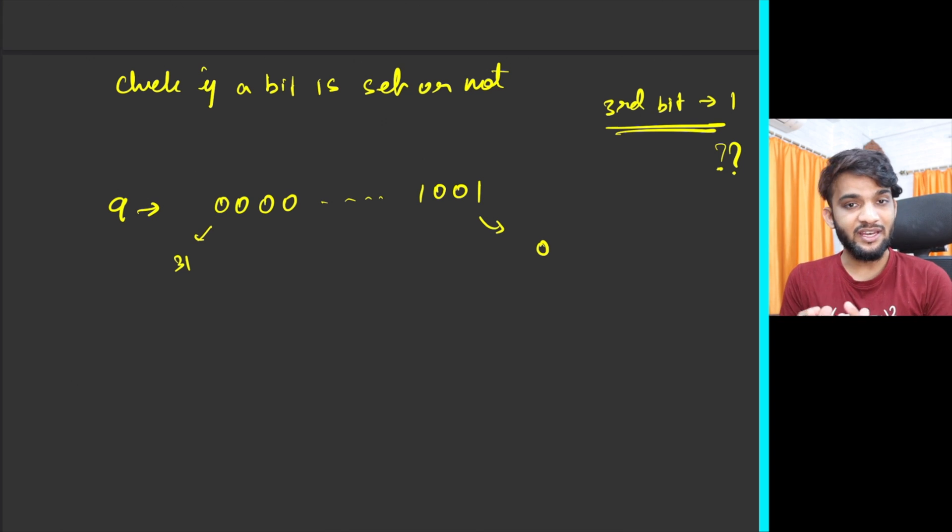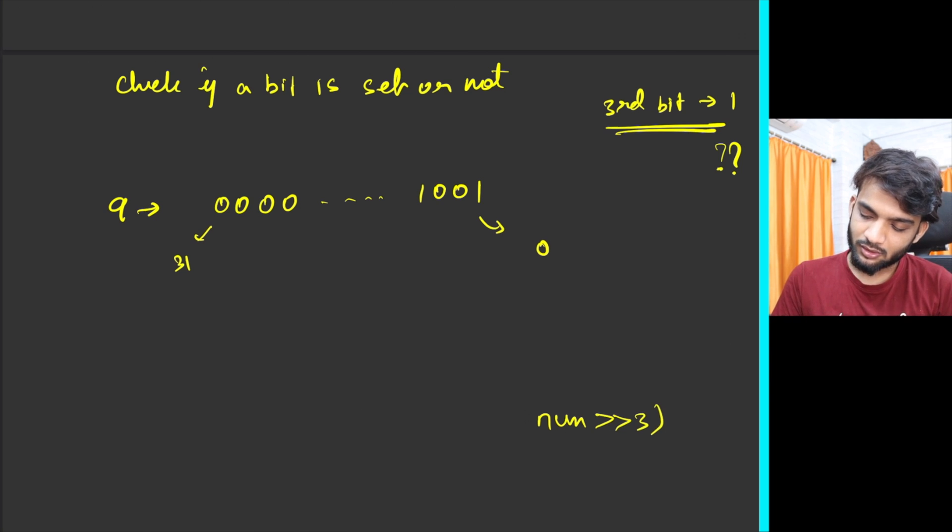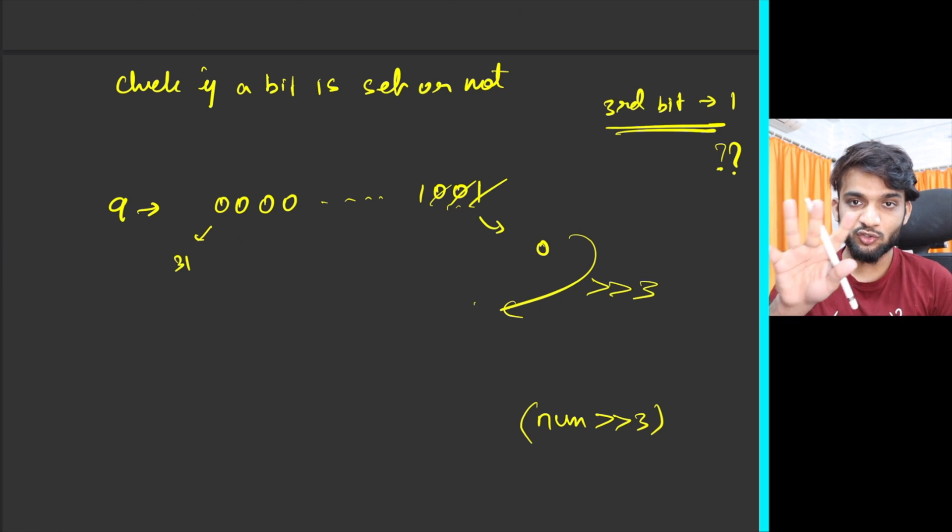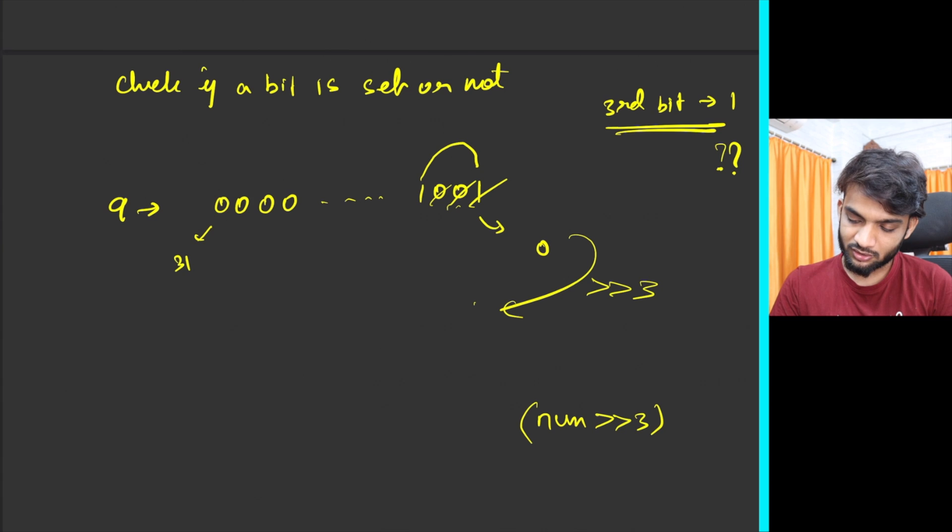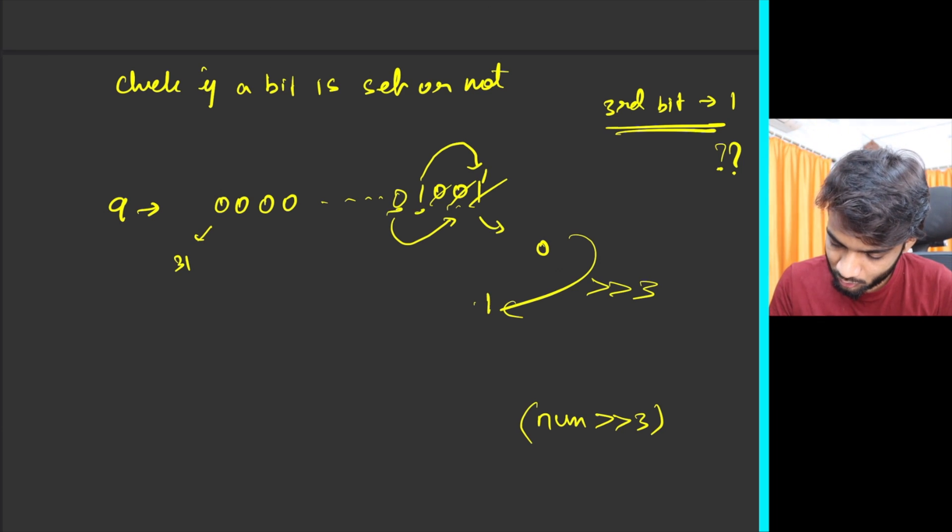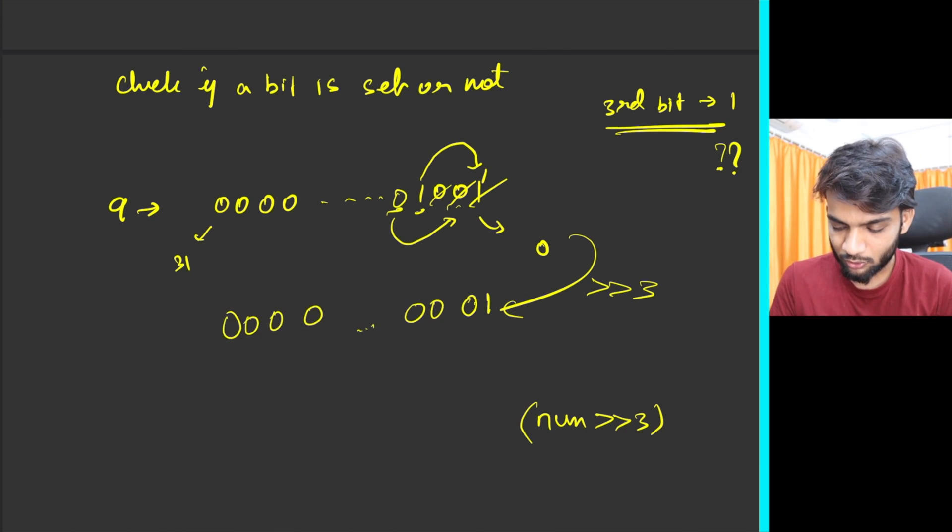It's very simple. What you will do is you will say the number right shift by three. If you shift this number rightwards by three, this goes off, this zero will come here. If I'm doing one more right shift, this will go here. So there are three shifts. If you do a three shift, this one will go here, this particular zero will go here.